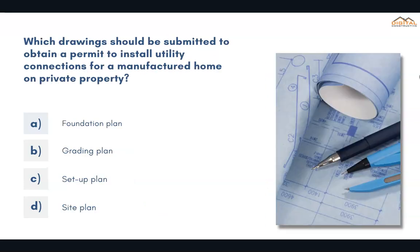Which drawings should be submitted to obtain a permit to install utility connections for a manufactured home on private property? The correct answer is D, site plan.